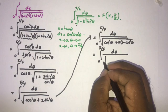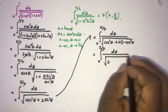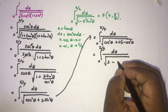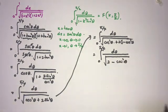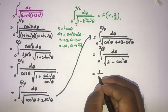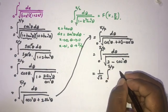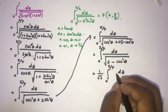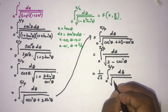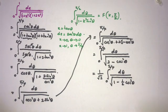Simplifying the expression under the square root: 2 minus 2 cos²(θ) plus cos²(θ) gives 2 minus cos²(θ). We factor out √2, so the integral becomes 1/√2 times the integral from 0 to π/4 of dθ over the square root of 1 minus (1/2) cos²(θ).